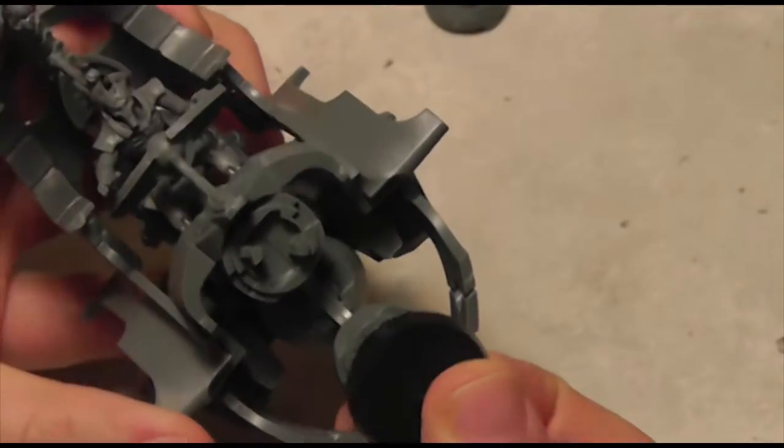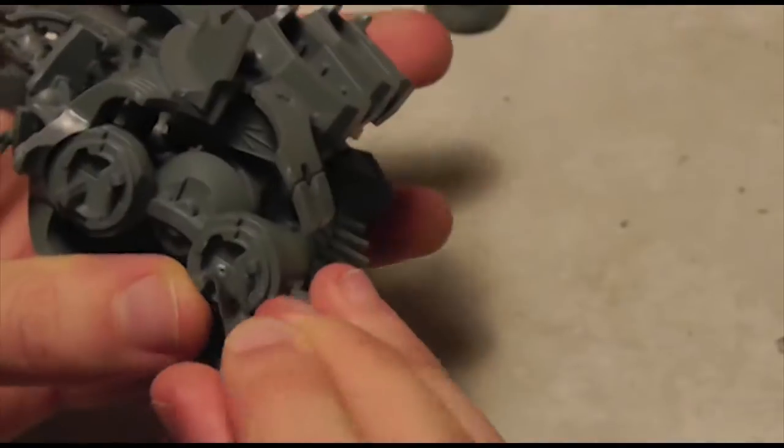There are two wire pieces that connect the cannon to the rib cage that I won't be using. It'll just be too difficult to keep the magnetization in mind for these as well.